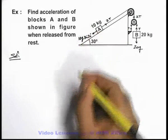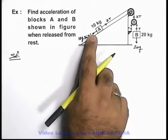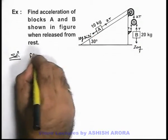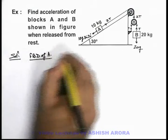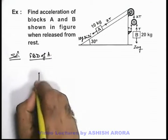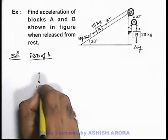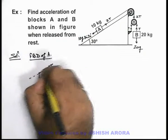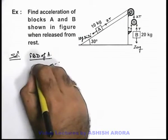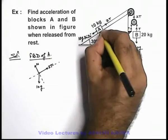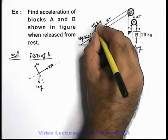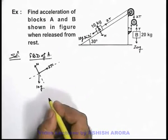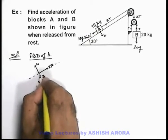That is 10g sin 30 degrees. Now in this situation if we draw the free body diagrams of the 10 kg and 20 kg blocks — the free body diagram of A: it will be experiencing 10g downward, 2T tension along the inclined plane, and perpendicular to the inclined plane it will be experiencing a normal reaction applied by the inclined plane. It will also exert the same normal force on the plane in the downward direction. This angle would be 30 degrees.